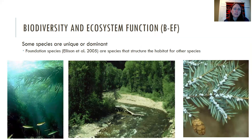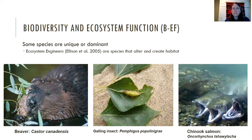Other species are considered foundation species — species that actually provide structure and habitat for others. A lot of these are plants: things like kelp in kelp forests, cottonwood trees in riparian forests, or hemlocks in regular forests. The woolly adelgid is currently taking out hemlocks, and so we are losing that foundation species.